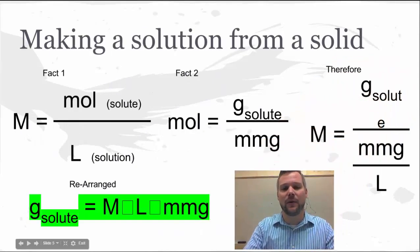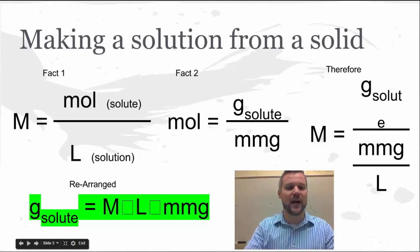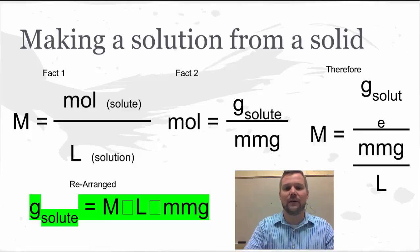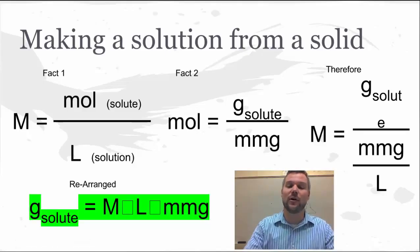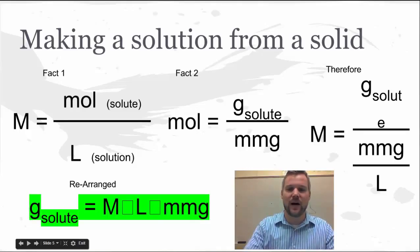There are three sets of math for making solutions. First: molarity equals moles of solute per liter of solution. Second: moles equal grams divided by molar mass in grams. So if you have 50 grams of sodium chloride, you divide by its molar mass of 58.44 to find how many moles you have. You can substitute grams over molar mass in place of moles in the molarity equation, giving you: molarity equals grams of solute divided by molar mass in grams, divided by liters of solution.